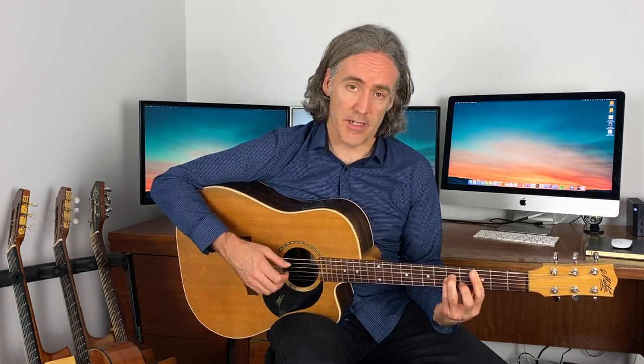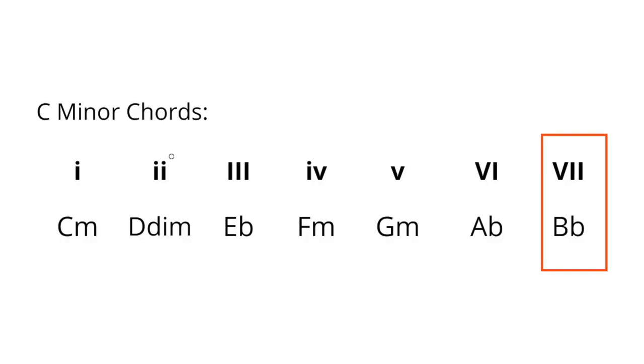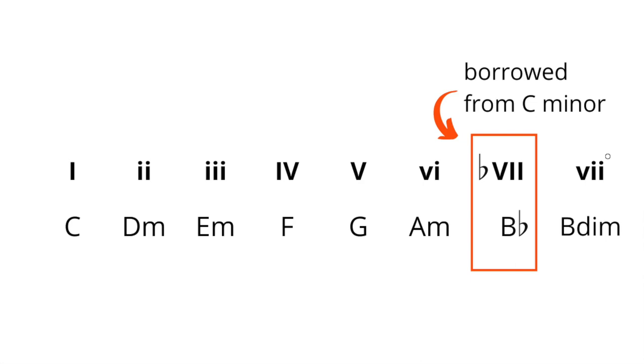Yet another common borrowed chord is the flat seven chord. That's borrowing the seven chord from C minor. The chords in C minor: one is C minor, two is D diminished, three is E flat major, four is F minor, five is G minor, six is A flat, and the seven chord is B flat major. In C major — C, D, E, F, G, A, B — B is the seven. This is a B flat chord, so we call it the flat seven major chord.